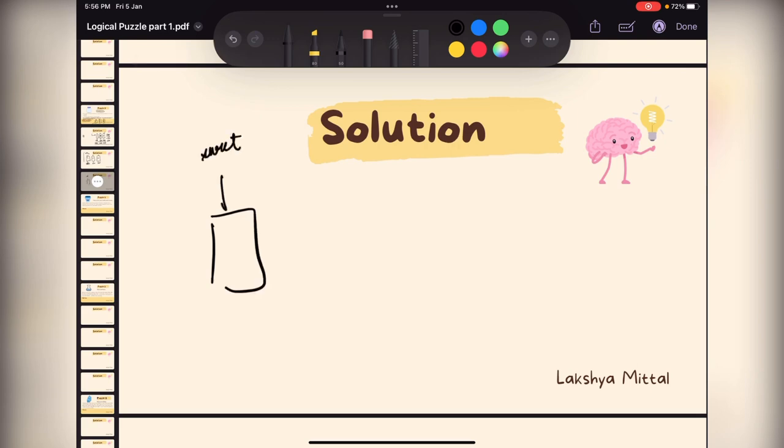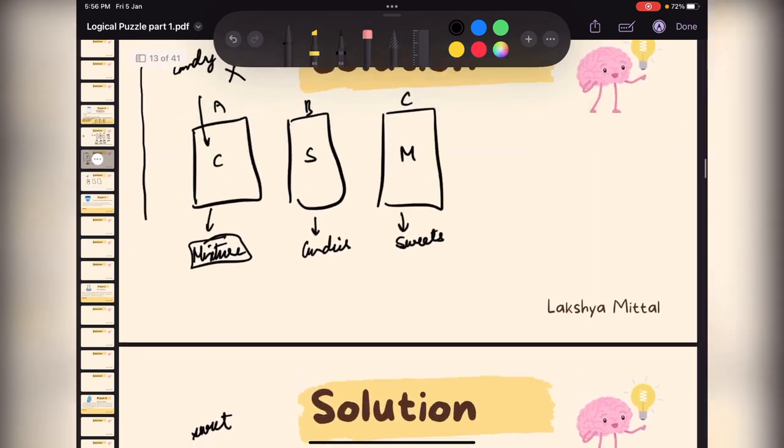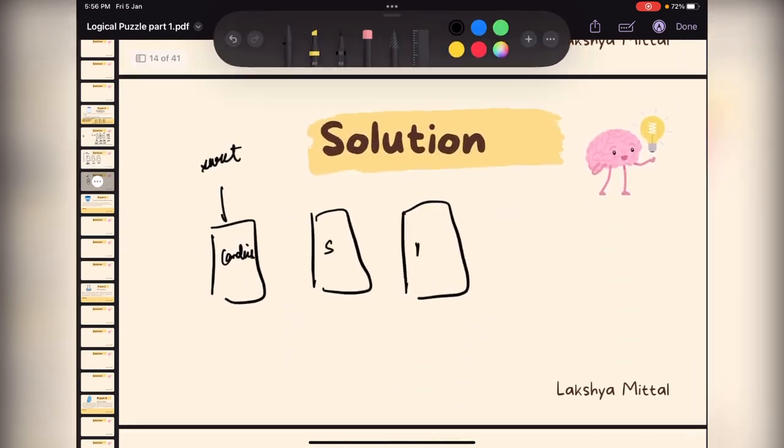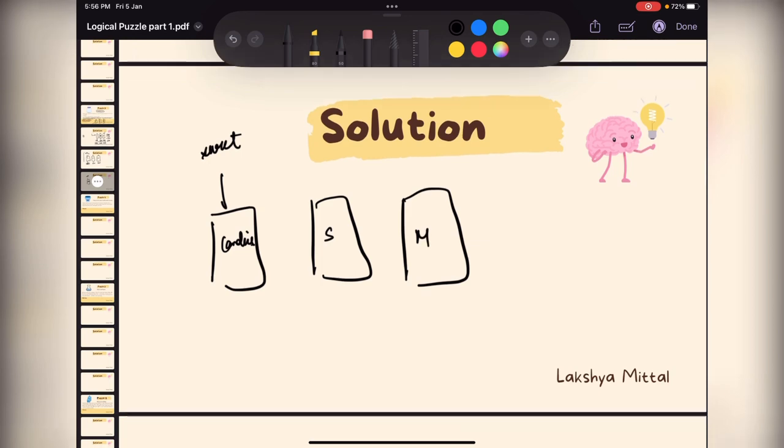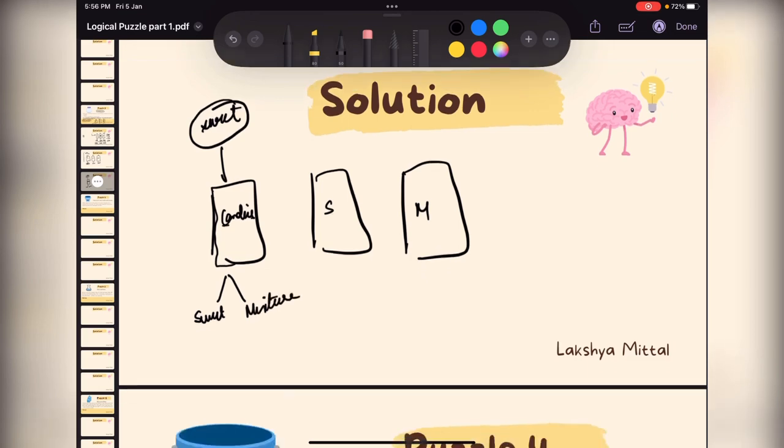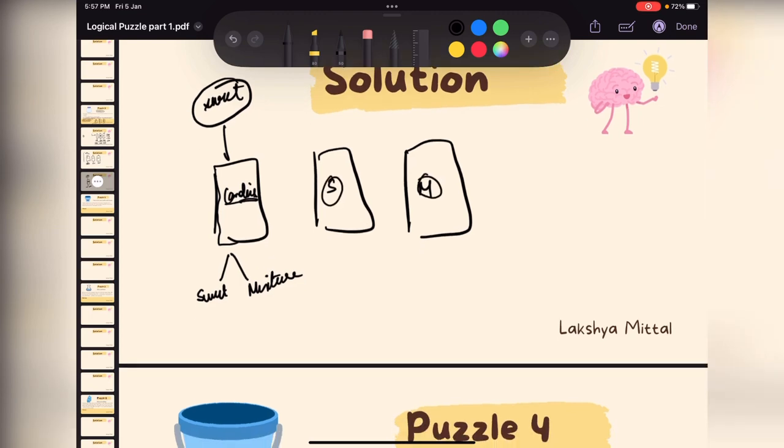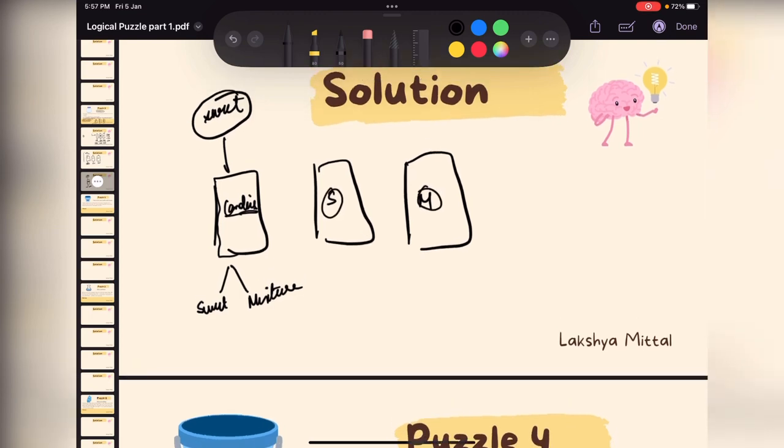It is labeled candy. Now you are confused that we have to label it. So this is sweet and this is a mixture and candy is already labeled. Now we get confused that these are two choices. This may be sweet and this may be a mixture because it was labeled candy. Either this is the one or this will happen because in the mixture there are sweets.